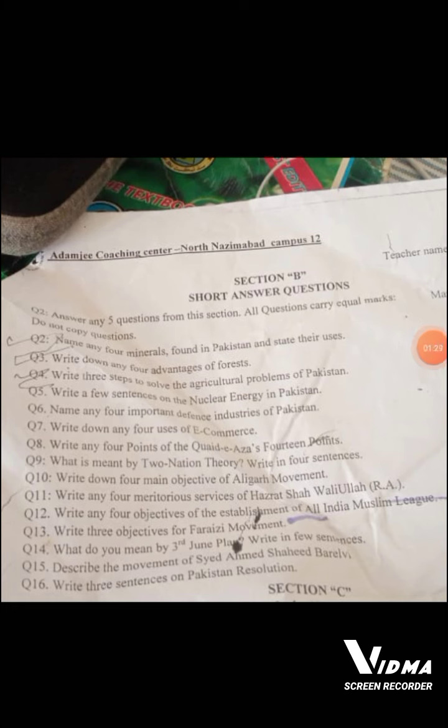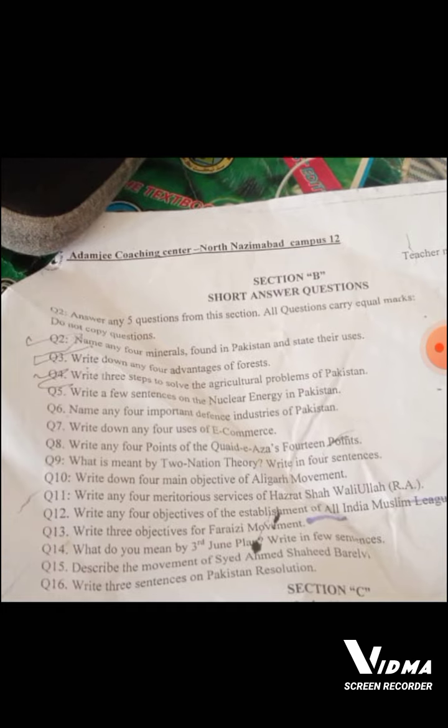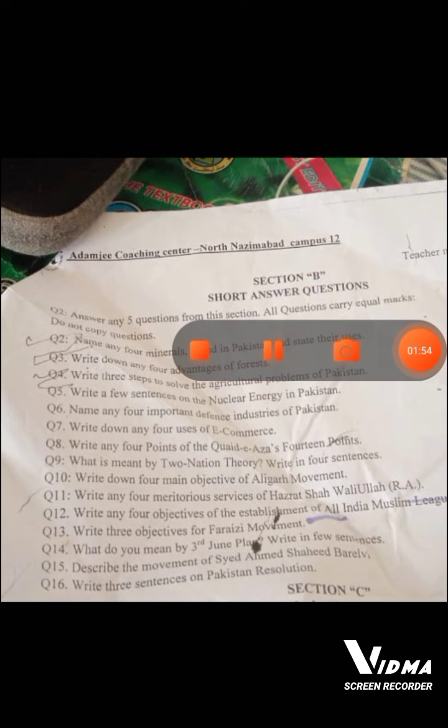Section B has a total of 16 questions given, and we have to attempt 5 questions. It is not necessary that the board will be the same — it depends on the board. Moving on, this is Section C, where we have some questions given.